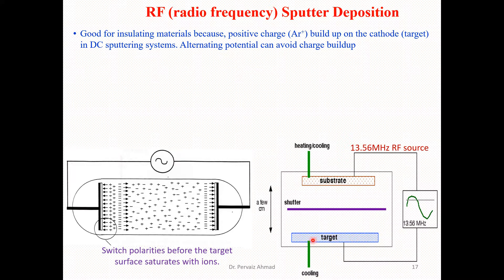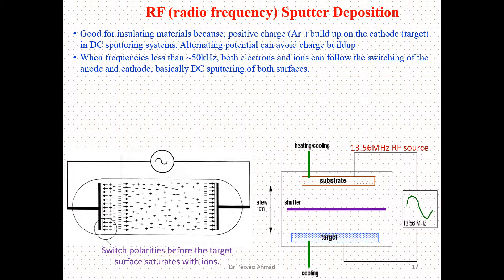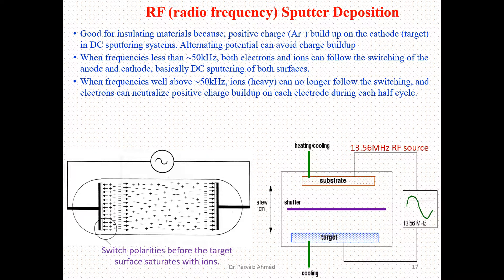In the RF sputtering arrangement, we have the target with cooling, a shutter, and the substrate with heating and cooling systems. The radio frequency source operates at 13.56 MHz. When the frequency is less than approximately 50 kHz, both electrons and ions can follow the switching of anode and cathode — essentially DC sputtering of both surfaces. When the frequency is well above 50 kHz, ions can no longer follow the switching.